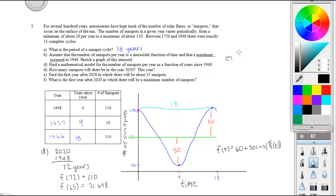For question E, it says find the first year after 2020 where there will be 35 sunspots. We are looking for the value of time such that the function equals 35, and the time value has to be greater than 72 years because we want it after 2020. That answer from the calculator was 78, so that's 78 years after 1948, which is year 2026.